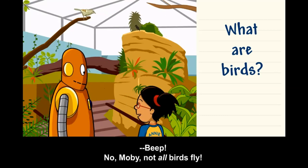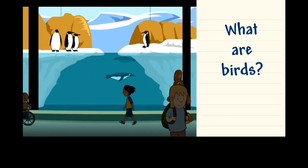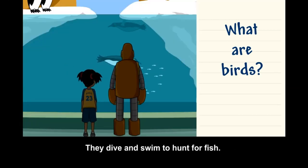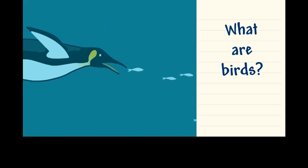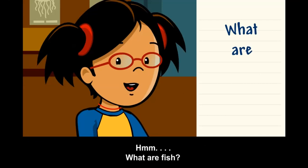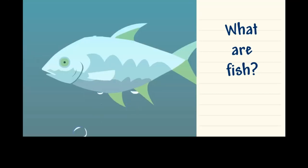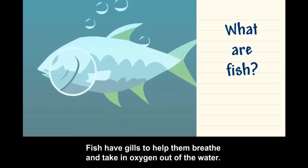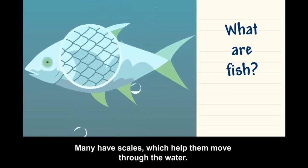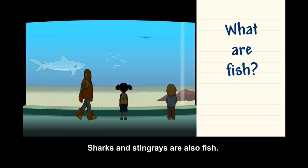Not all birds fly — penguins are flightless birds; they dive and swim to hunt for fish. What are fish? Most fish are vertebrates that live in water. Fish have gills to help them breathe and take in oxygen out of the water. Many have scales, which help them move through the water. Sharks and stingrays are also fish — they have gills but no scales; their bodies are made of cartilage, the same stuff that's in our nose and ears.